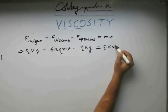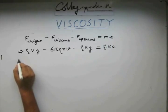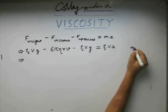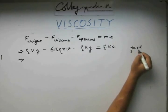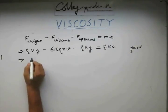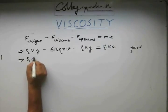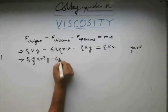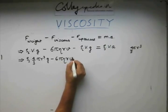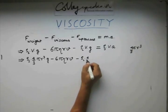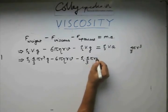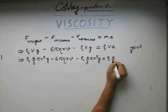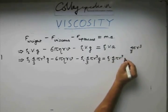V can be replaced with this quantity, 4π, 4 by 3πr³. This is the volume of the sphere. So, it is ρs times 4 by 3πr³ times g minus 6πηrv minus ρl into 4 by 3πr³ times g. This is equal to ρs times 4 by 3πr³ times a.